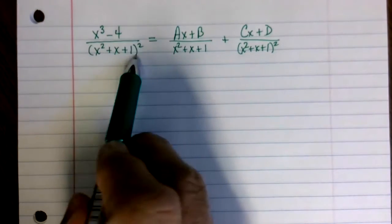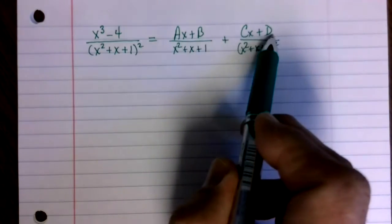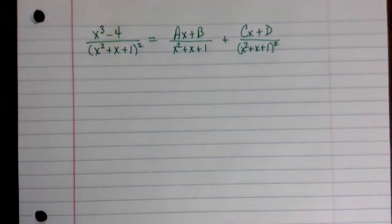This is a fourth degree polynomial, and so there are one, two, three, four unknown constants that we have to solve for.